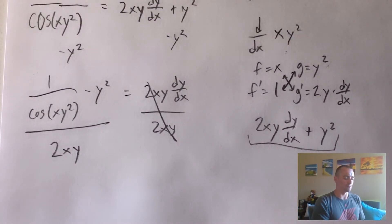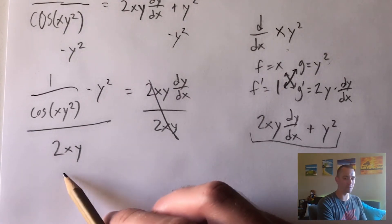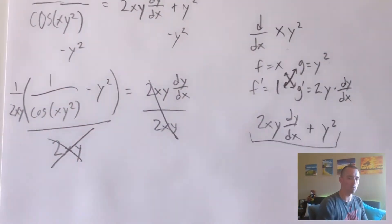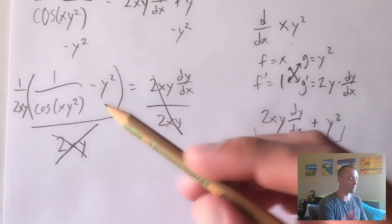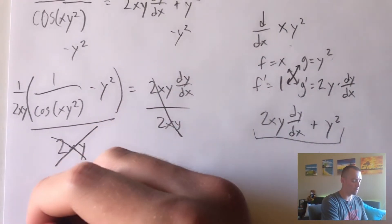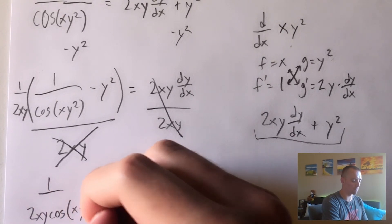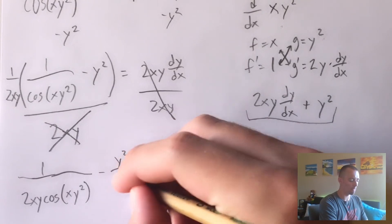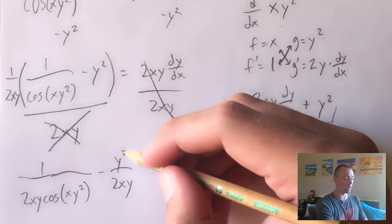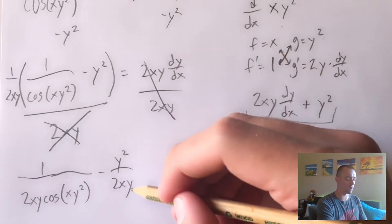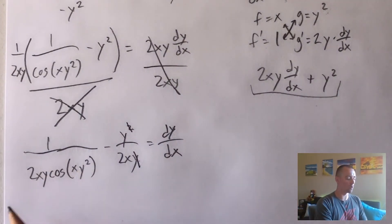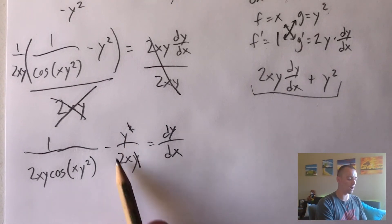We then divide by 2xy over to the other side. The result is a fraction within a fraction, so we rewrite dividing by 2xy as multiplying by one over 2xy, then distribute to both terms. That gives us one over 2xy cosine of xy squared, minus y squared over 2xy. We can simplify further: y squared on top cancels one y on the bottom, leaving us with one over 2xy cosine of xy squared, minus y over 2x.